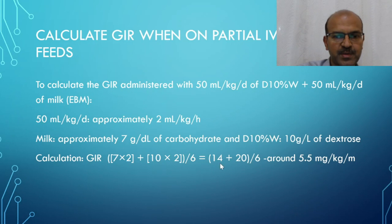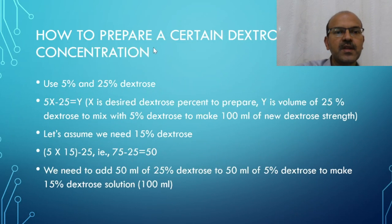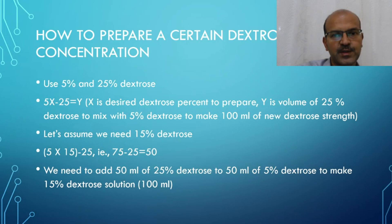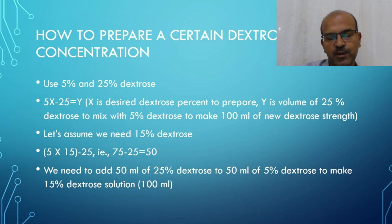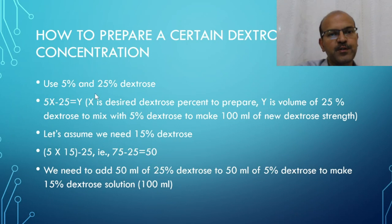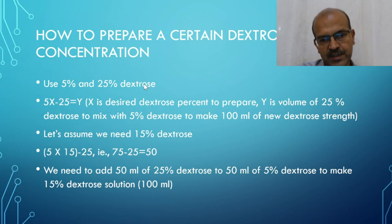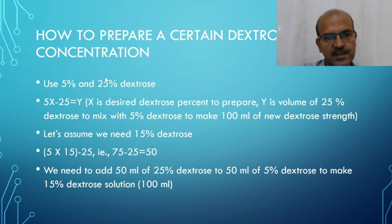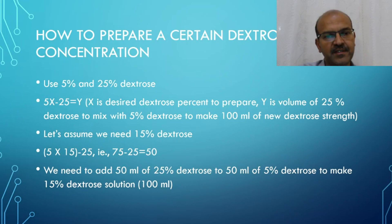Divided by 6 using the same formula: (14 + 20) ÷ 6 ≈ 5.5 mg/kg/min. If a baby has hypoglycemia and you need to prepare a specific dextrose concentration in the NICU, you can use a mixing formula with 5% and 25% dextrose, though different combinations like 10% and 50% can also be used with the same principle.